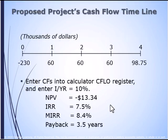So in the end, here we have our project. We've calculated the net present value and internal rate of return — all of the statistics. We see that the net present value is negative. Using our capital budgeting technique decision rules, this would be a project that we would not do. It does not increase the wealth of the company or the shareholders.